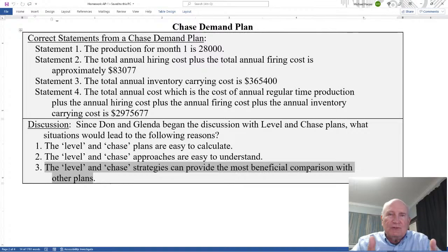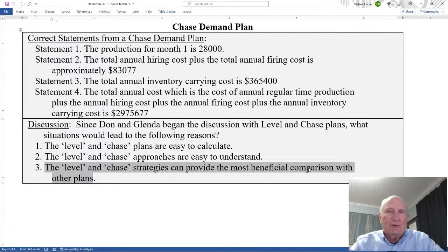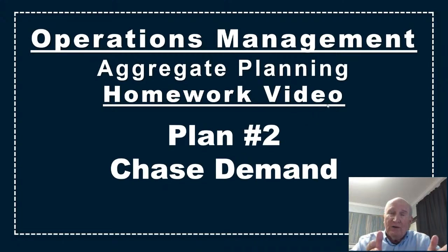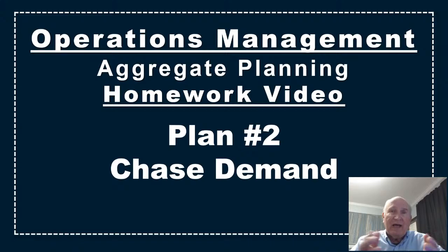Level and chase are a good place to start, to then move to what's going to work for your specific company, which will be different for every company. That's all I have for the chase demand plan, plan number two. This is plan two of four — plan one is level, two is chase — I'll do three and four in another video. I hope this helps. Be safe and take care.